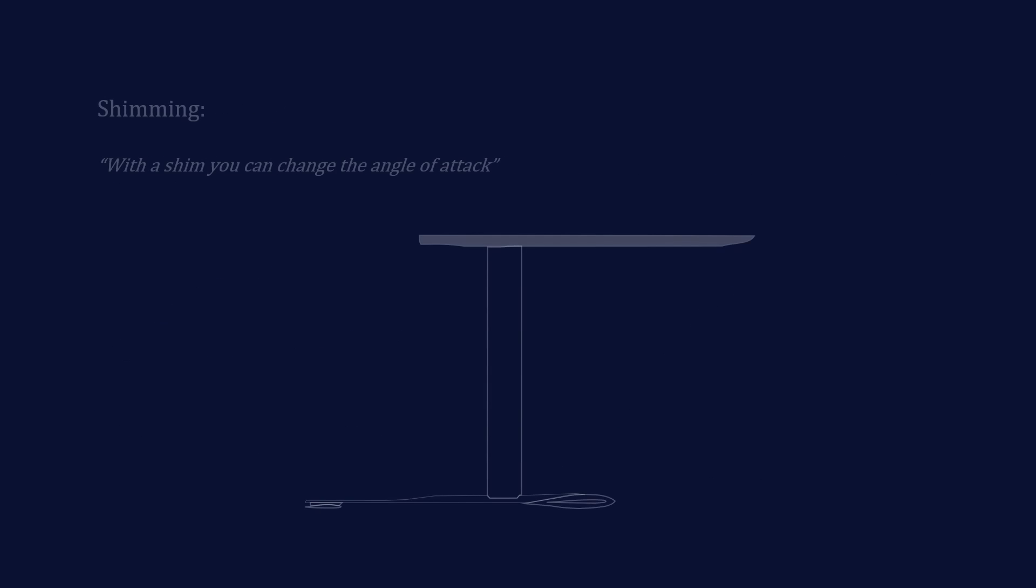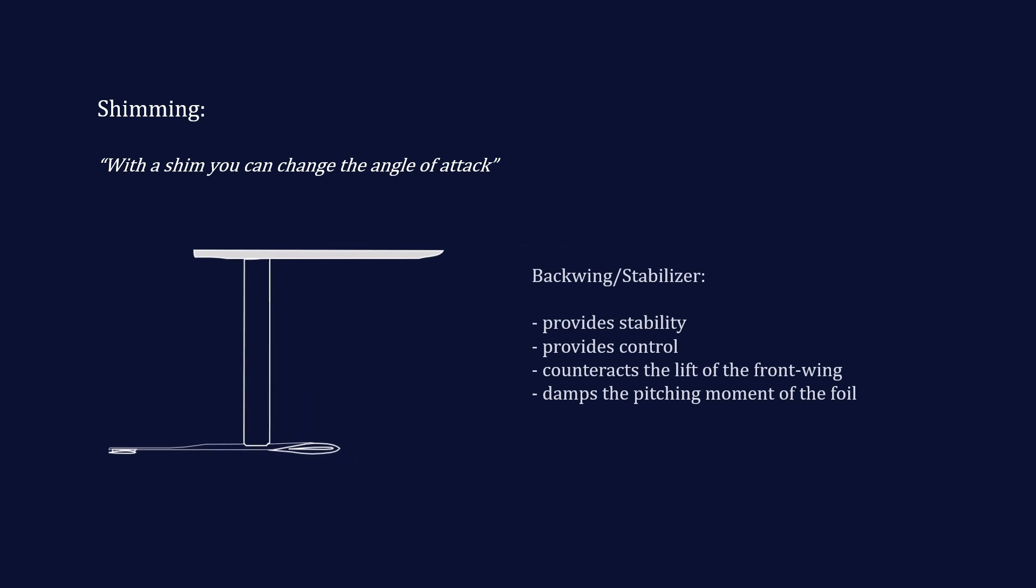Actually you can apply a shim to the front or the back wing. However, most of the time shimming is applied to the back wing. Therefore, I will in the upcoming explanations focus on the back wing shimming. As you most probably know, the back wing has several functions. It provides stability and therefore is also often called stabilizer, provides control, counteracts the lift of the front wing and also damps the pitching moment of the foil.